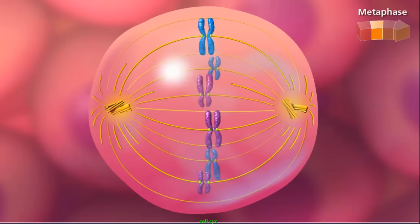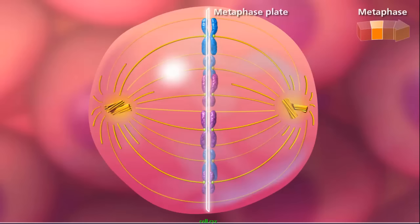During metaphase, all chromosomes are aligned at the equator of the cell, called the metaphase plate.